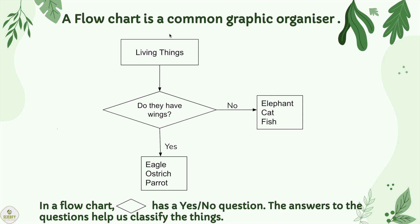A flowchart is a common graphic organizer. It is important to know how to read a flowchart correctly. Look at the flowchart. In a flowchart, this symbol has a yes or no question. The answers to the questions help us classify the things. The question is: do they have wings? No means elephant, cat, fish — these animals do not have wings. Yes means eagle, ostrich, and parrot — they have wings.